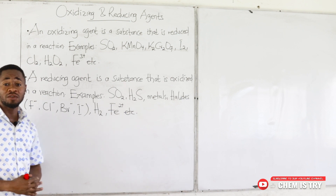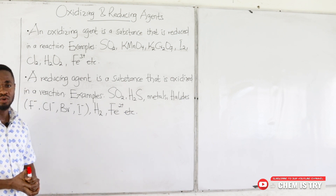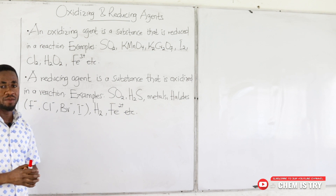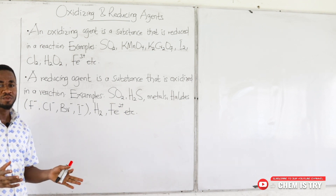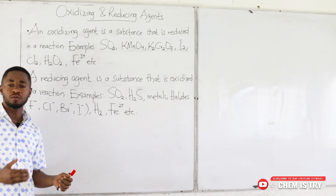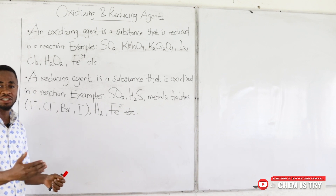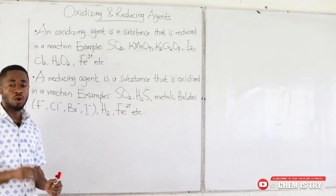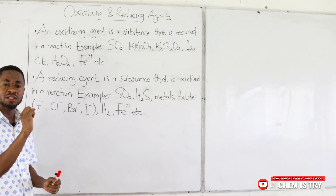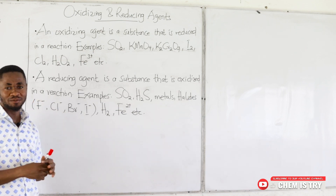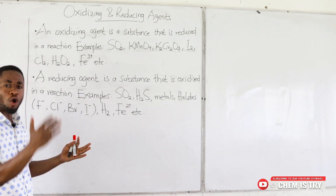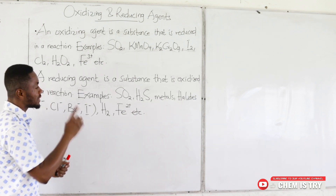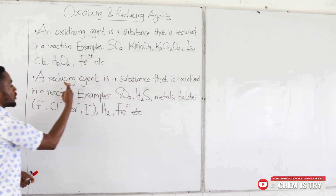Sometimes you'll be given a chemical reaction and asked to identify the oxidizing agent and the reducing agent. To do this, we calculate the oxidation numbers of all the elements in the reaction, then ask ourselves which one is undergoing oxidation — that is, an increase in oxidation number. The substance undergoing oxidation is called the reducing agent.